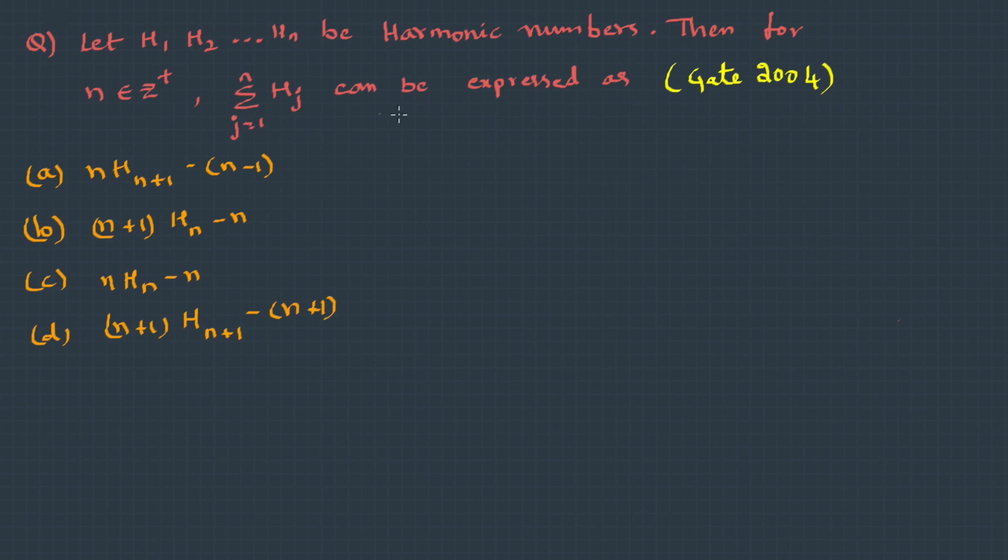They're talking about harmonic numbers and the summation of the harmonic numbers. So this is Sigma(Hj) from j=1 to n, which is H1 + H2 + H3 + ... + Hn.